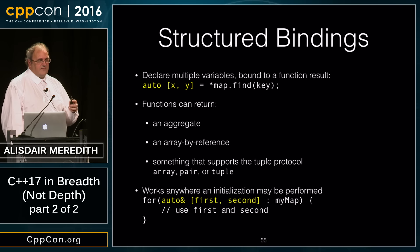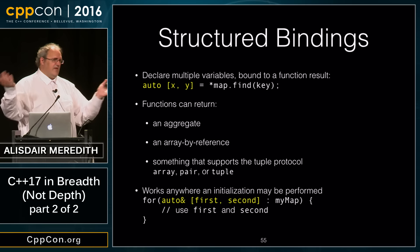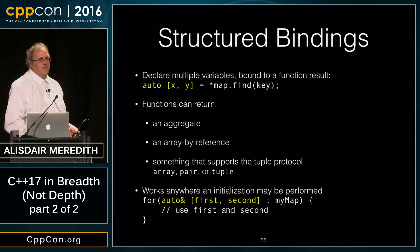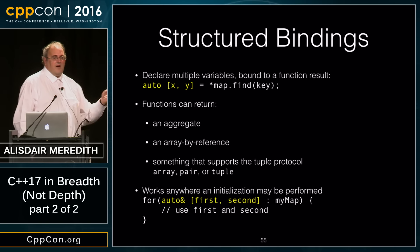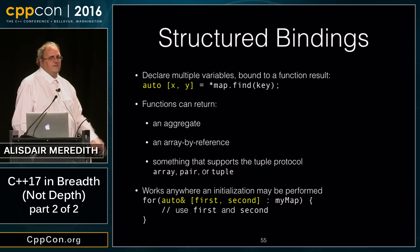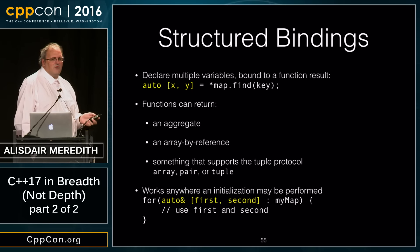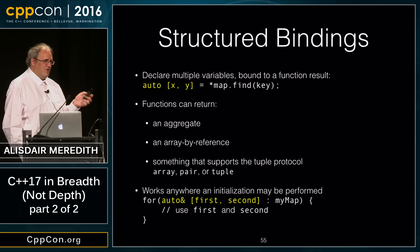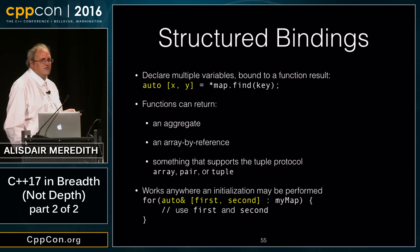What does the structured binding syntax work with? Functions can return any aggregate. If I've got a C-style struct, I don't need to do anything extra — it will bind correctly as long as I provide the right number of identifiers. I can return an array by reference, or something that supports the tuple protocol, though the tuple protocol hasn't been fully nailed down in the library yet, but it will be cleaned up by the time C++17 goes to print.